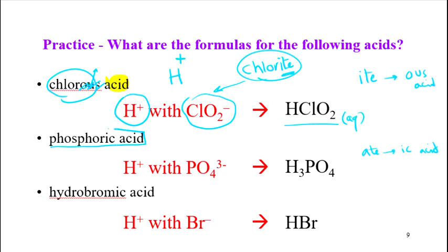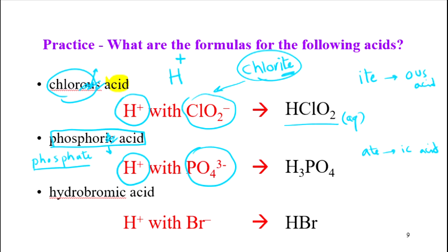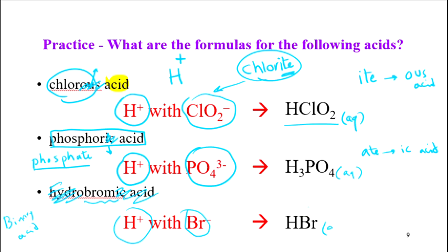Phosphoric acid: '-ic acid' means we had the polyatomic ion ending in '-ate', so we had phosphate. The formula for phosphate is PO4 three-negative. H is one-positive, so using the cross-and-down method for ionic compounds, we get H3PO4. Finally, hydrobromic acid: it has 'hydro' at the beginning and '-ic acid' at the end, which means it is a binary acid — H and one element, Br (bromine). So the formula is HBr.